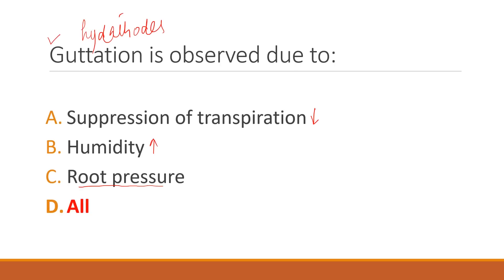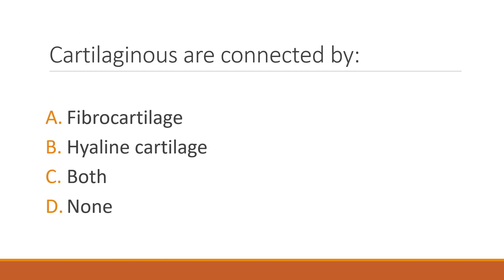Cartilaginous joints are connected by both hyaline and fibrocartilage. Hyaline cartilage is the most abundant form — movable joints have hyaline cartilage. Fibrocartilage forms the intervertebral disc: the inner part is the nucleus pulposus and the outer part is the annulus fibrosis, which is made up of fibrocartilage.